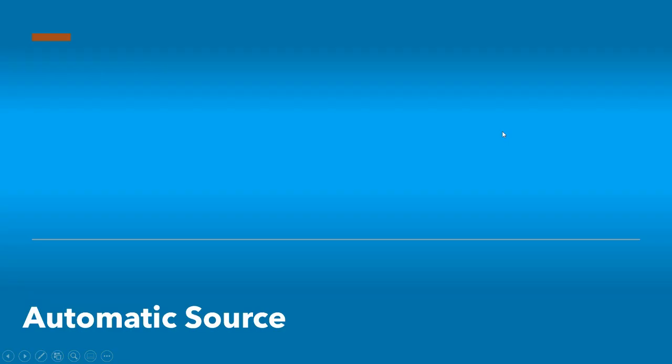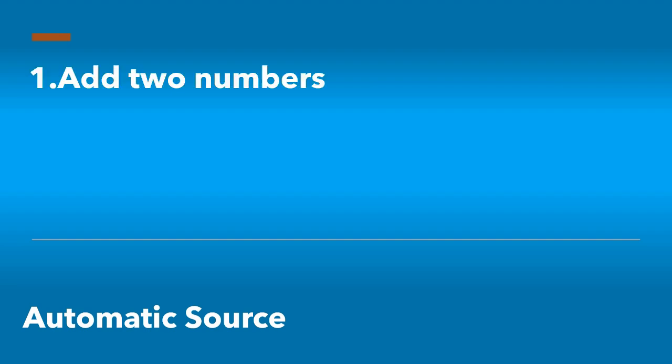In this video, we're going to be walking through three coding examples. The first example will be relatively simple — we're just going to write an R function that adds two numbers together, and then convert that into an API so that you can see how the plumber package works in action. Then we'll walk through a second example where we'll show how we can take an R function that generates a plot and convert that into an API.